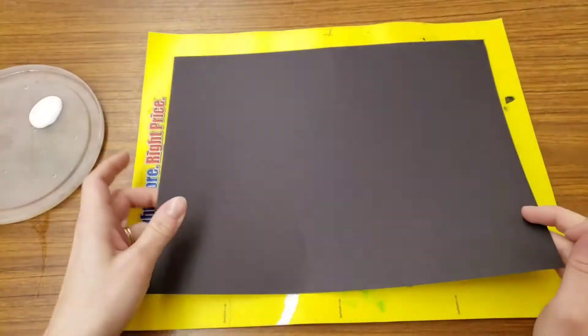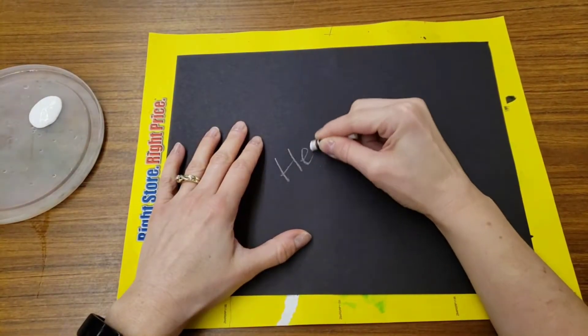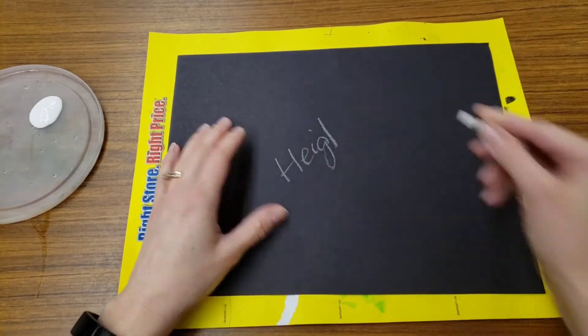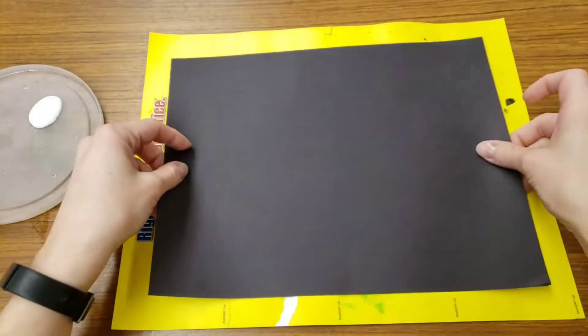You need a messy mat and a piece of black paper. Please write your name on the black paper and flip it over.